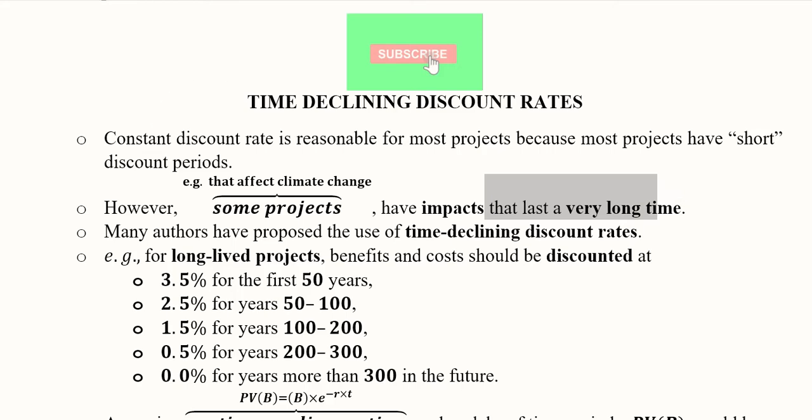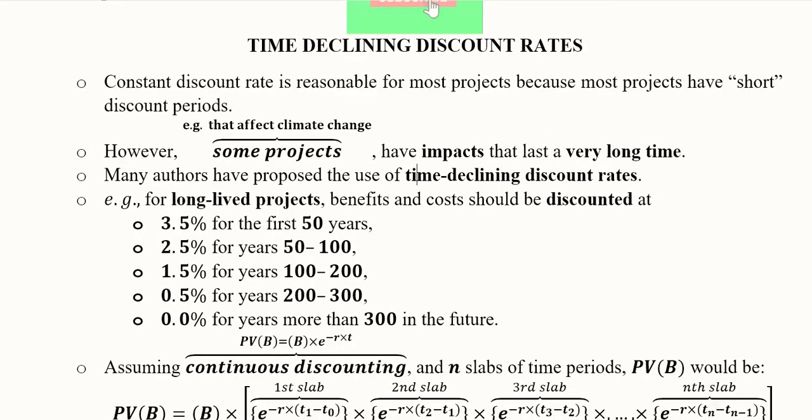For that we should not use the constant discount rate, we should decline it. Because otherwise the process of discounting will become very intense and it will definitely decrease the net benefits drastically. In order to keep it in a moderate way, we can decline the discount rate after a substantial amount of gap.